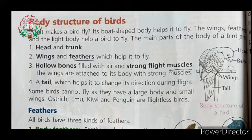Here in this picture, the different parts of a bird are clearly shown: head, trunk, wings, and tail. From this picture you can easily identify the different parts of a bird.